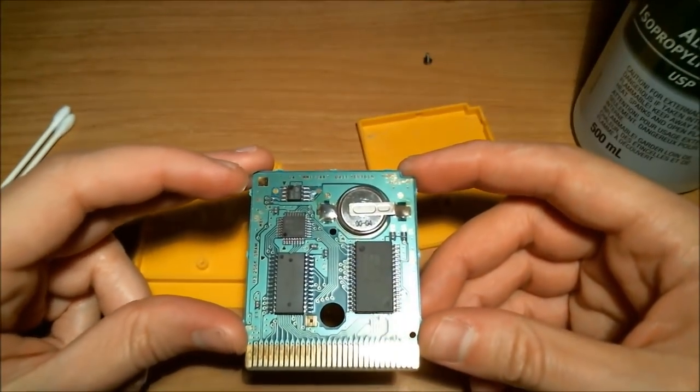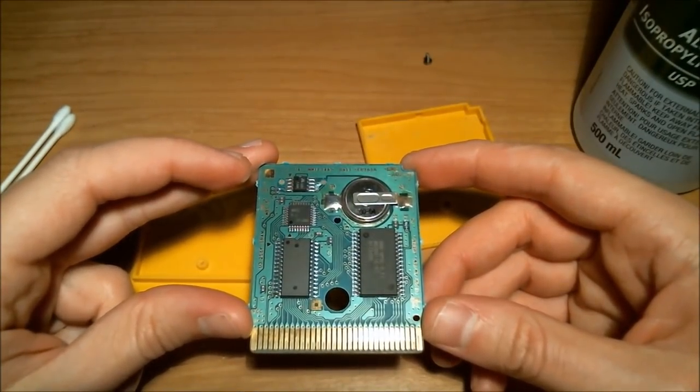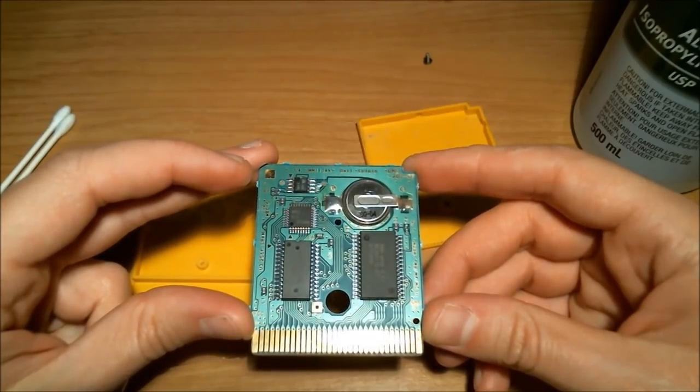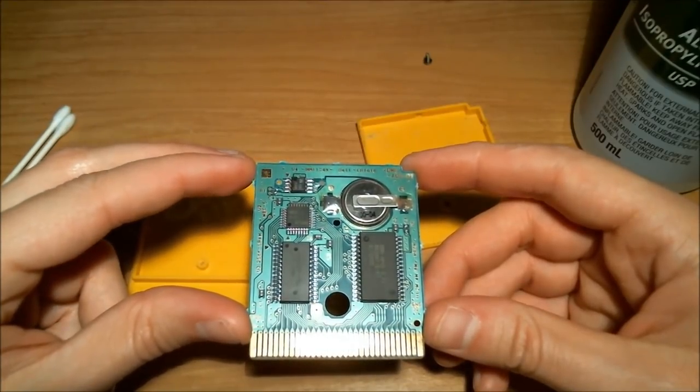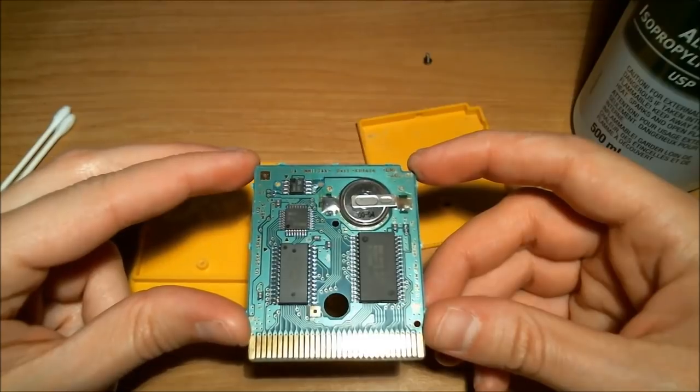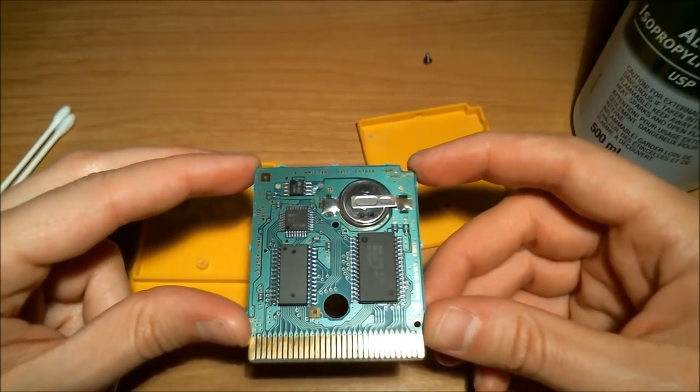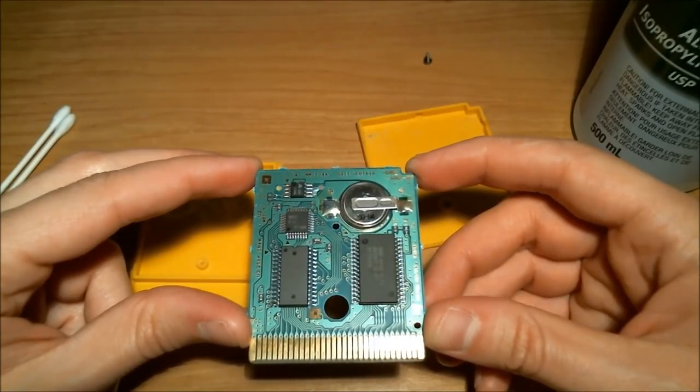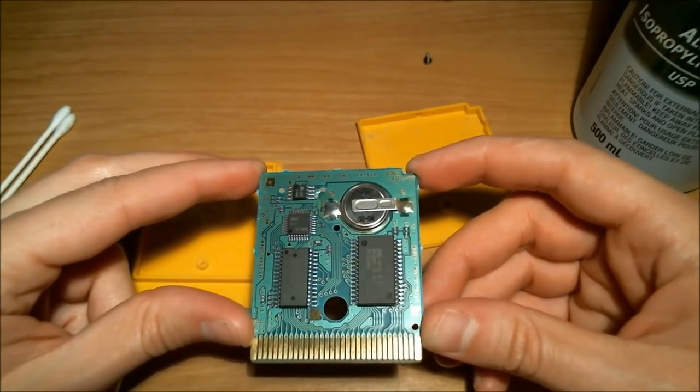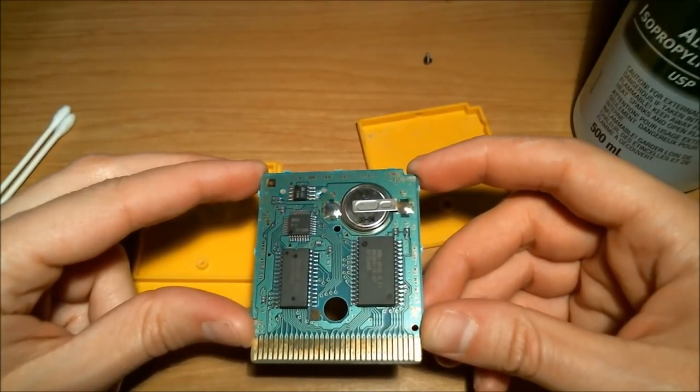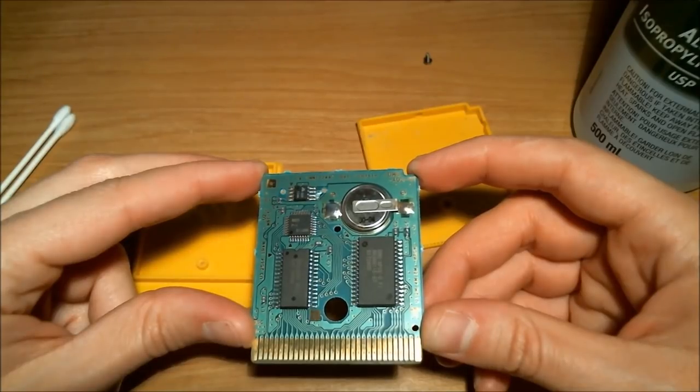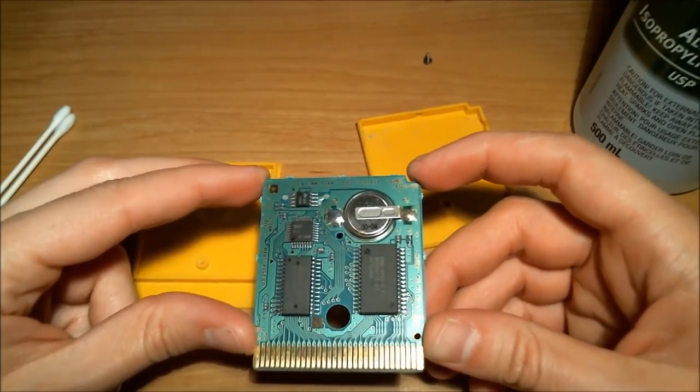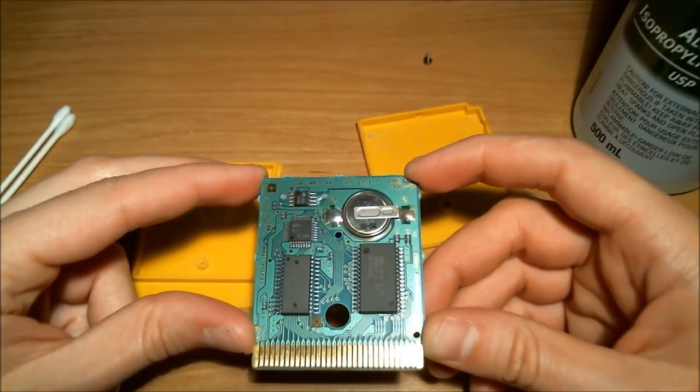Pokemon Yellow, it turns out, is actually an anomaly among the Pokemon games in that most of them use a CR2025 battery. I believe that Pokemon Yellow is actually the only Pokemon game that uses the CR1616. So if you plan to replace the battery in your Pokemon game, Red or Blue, or Gold or Silver, bear in mind it's probably a CR2025, not a CR1616.